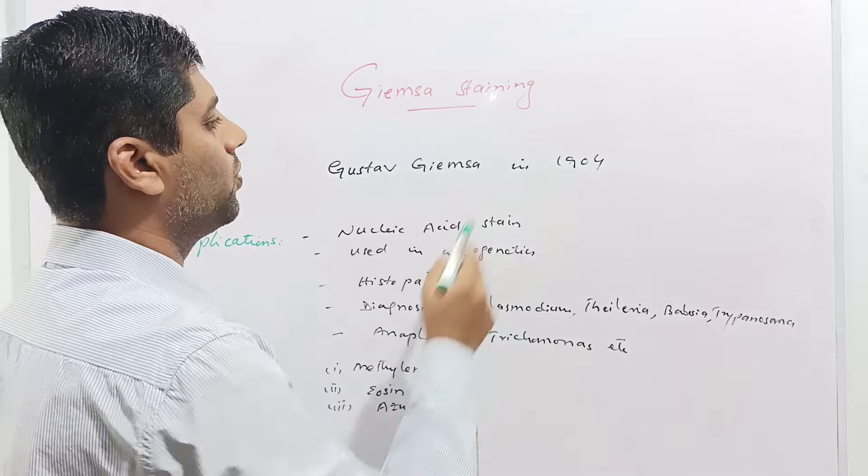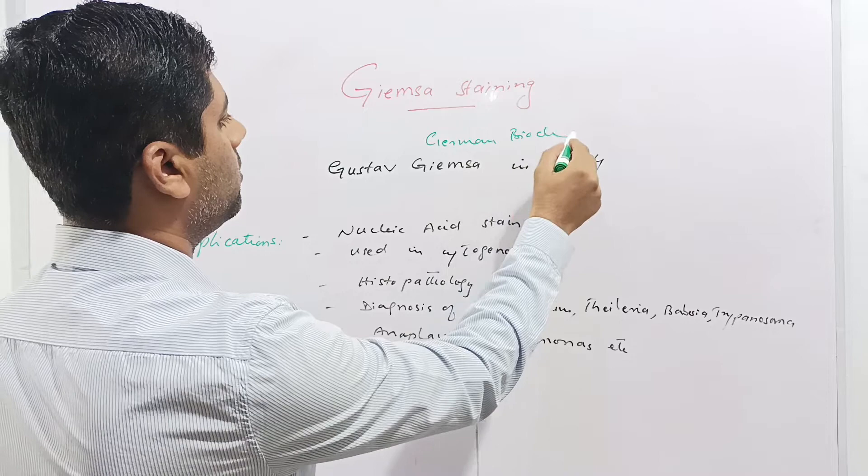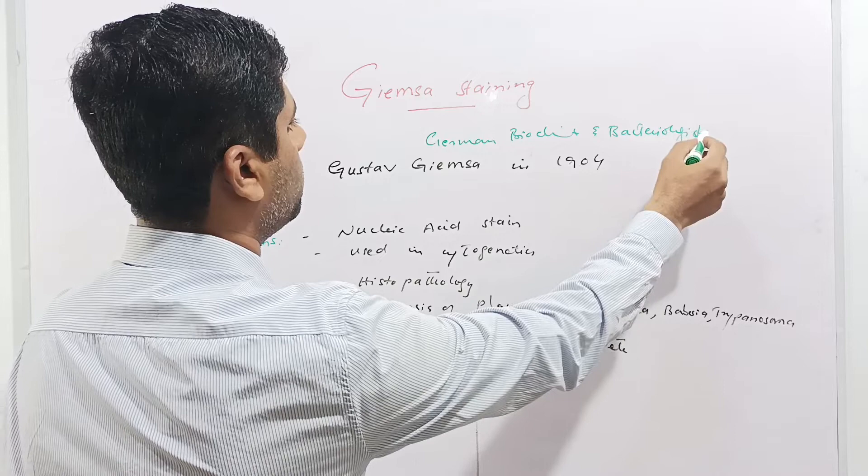Giemsa staining was developed by Gustav Giemsa in 1904. Gustav Giemsa was a German biochemist and bacteriologist. This Giemsa stain is named after its developer.